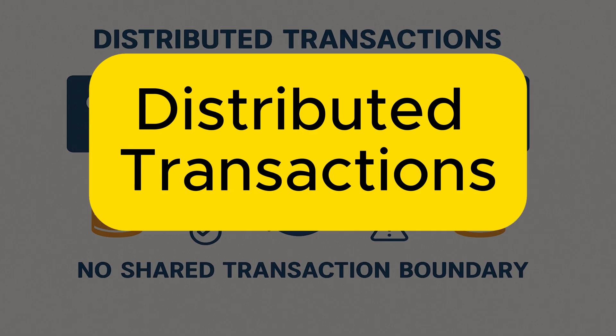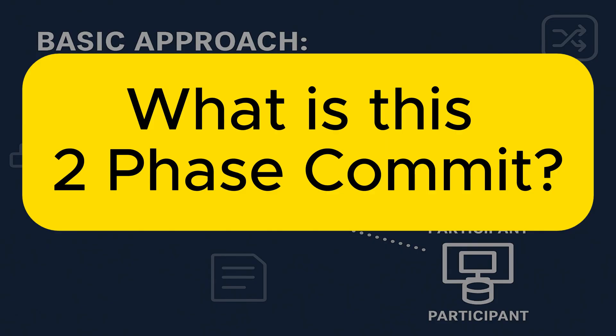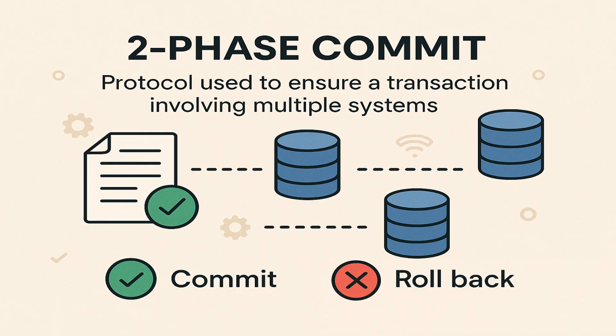That's where distributed transactions come in. The most basic approach to handle distributed transactions is called a two-phase commit, also known as 2PC. Two-phase commit is a protocol used to make sure a transaction involving multiple systems either fully commits or is fully rolled back.